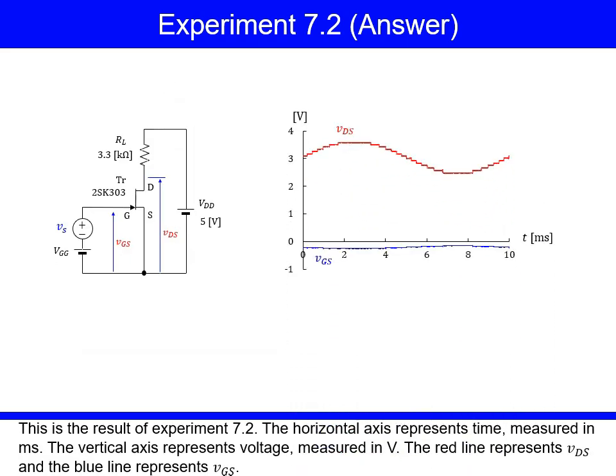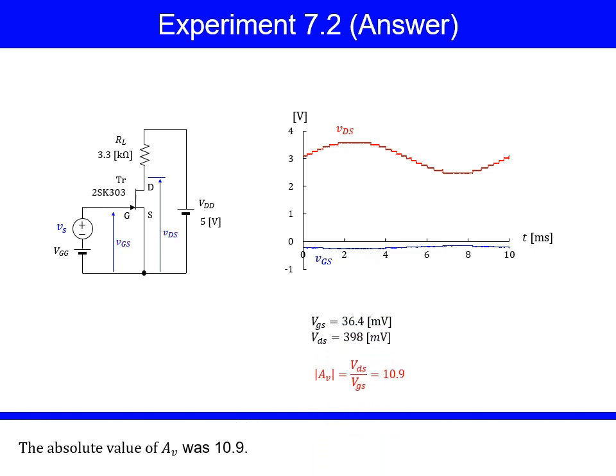This is the result of Experiment 7.2. The horizontal axis represents time measured in milliseconds. The vertical axis represents voltage measured in volts. The red line represents VDS and the blue line represents VGS. The absolute value of AV was 10.9.